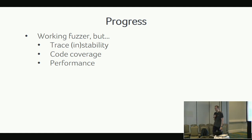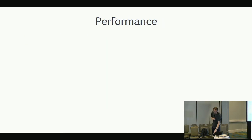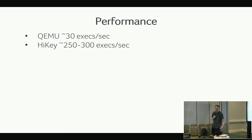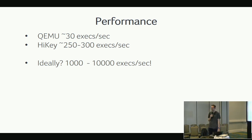An even bigger problem is performance. In QEMU I may be able to get 30 executions per second. On hardware — I did some tests on the HiKey board a while ago — a few hundred executions per second. But for a fuzzer you want 1,000, 10,000, or far more than that. Definitely more than 30 to a few hundred.